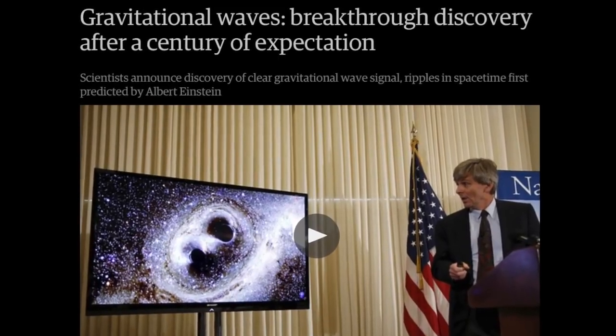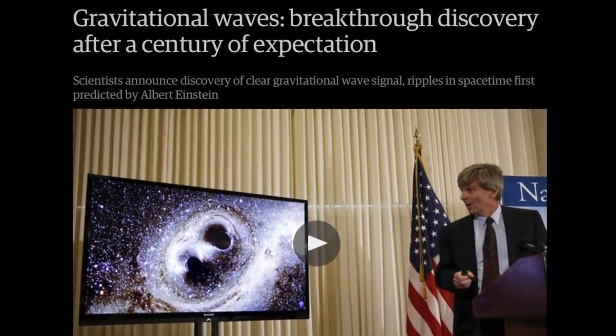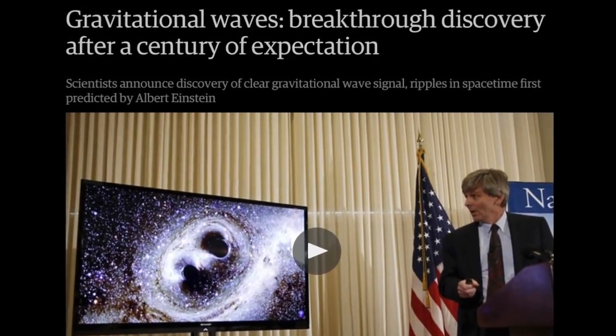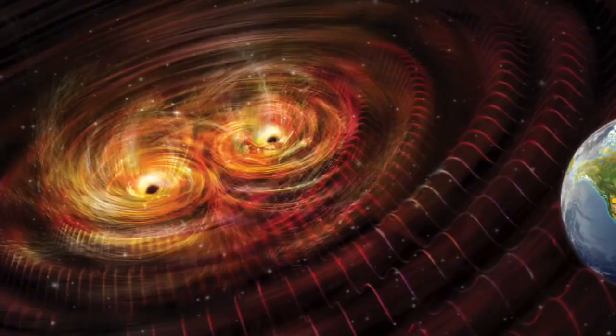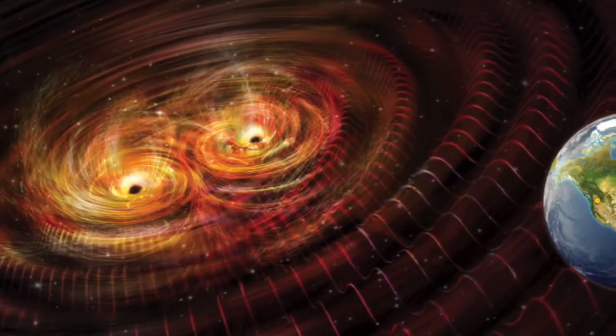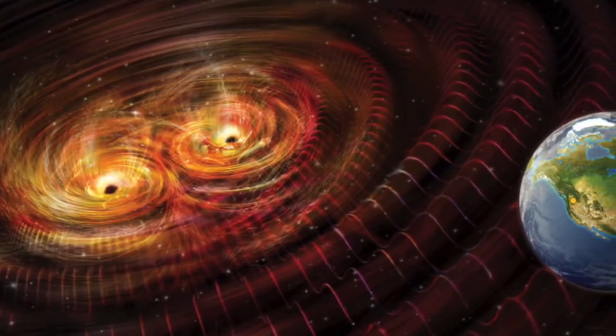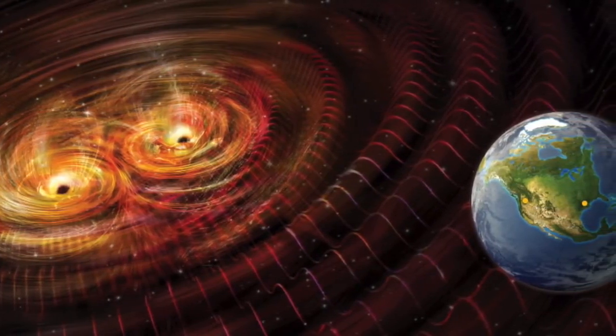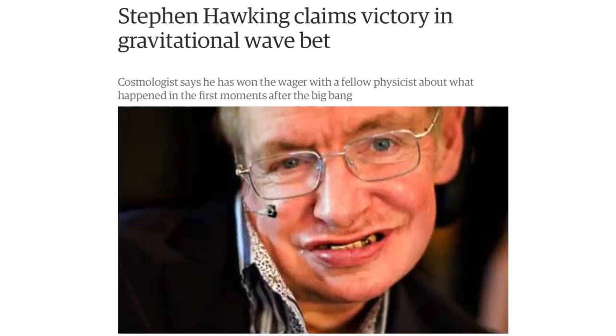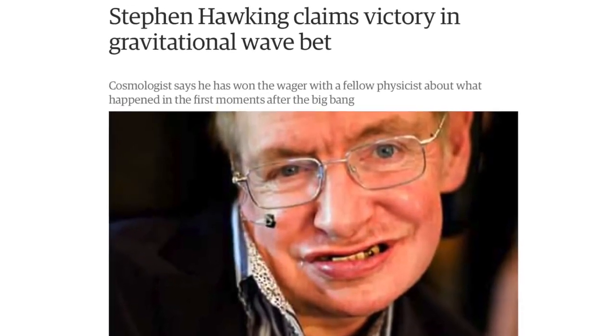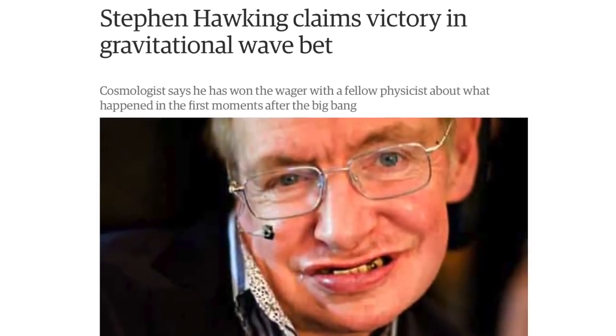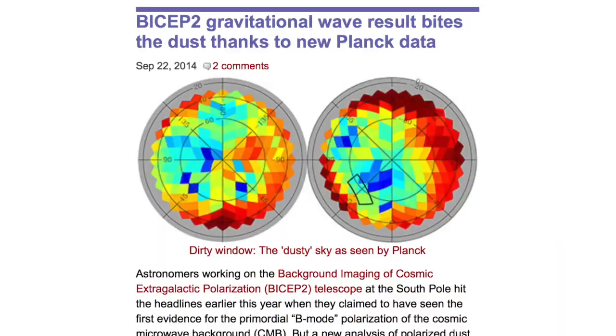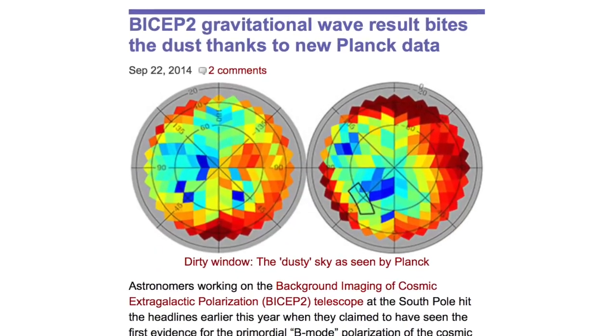In February of last year, a team working with the LIGO gravitational wave detector announced their discovery. We are told that the instruments detected ripples in space-time which were caused by the collision of two black holes a billion years ago. This was not the first time such a pronouncement produced a media firestorm, although previous claims were later disconfirmed.